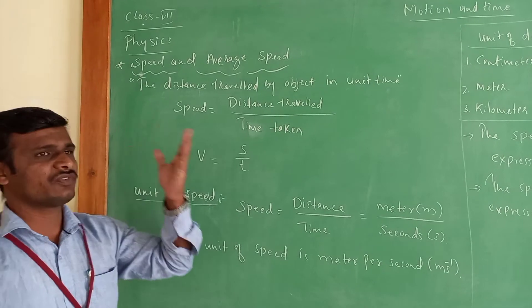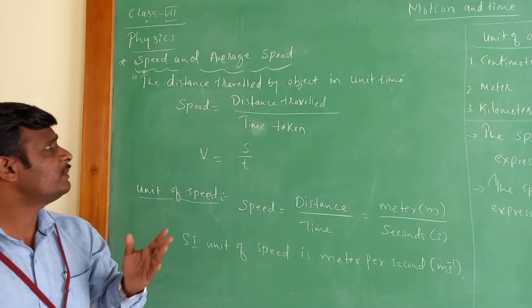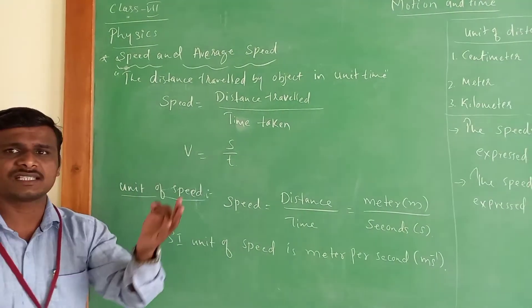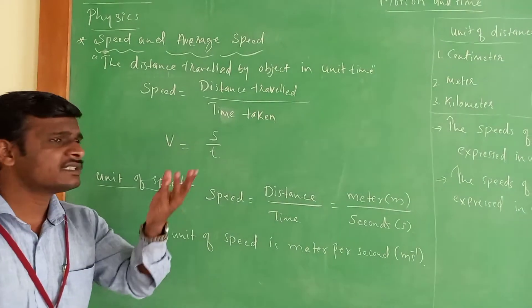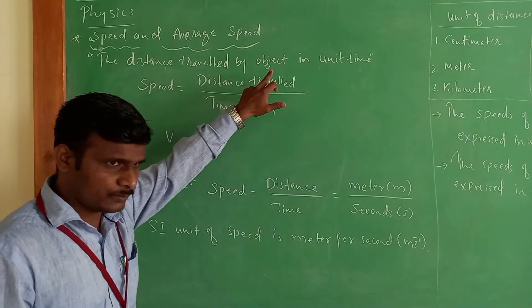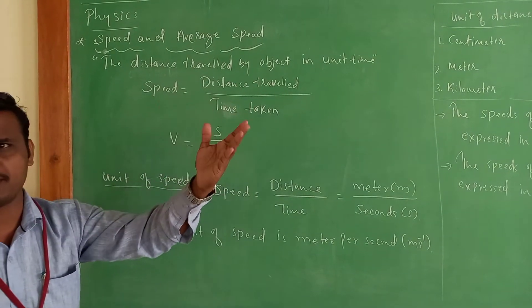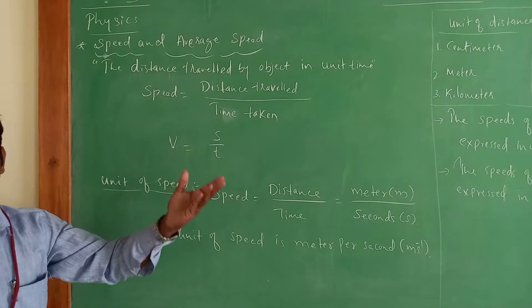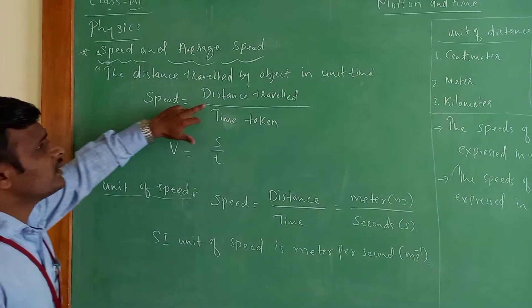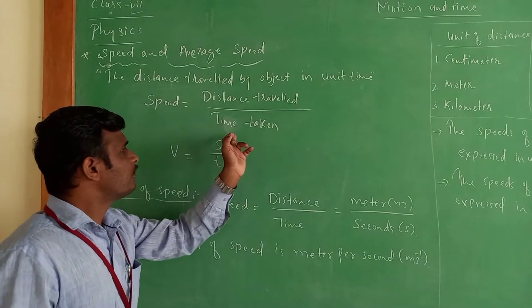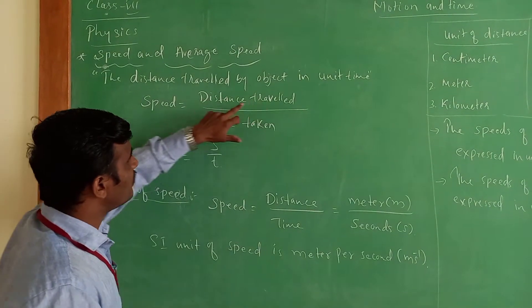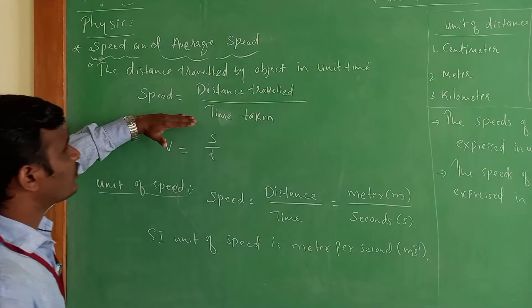So first we are going to define the term speed. Speed means the distance travelled by an object per unit time, or the distance covered by an object per unit time — we call it speed. The definition of speed is: the distance travelled by an object per unit time. Speed is equal to distance travelled divided by time taken. This is the formula for speed.